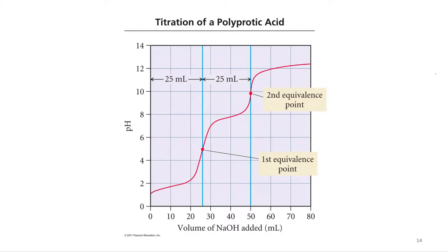What about if you have a polyprotic acid or a diprotic acid? Well, you can do a titration of a polyprotic acid or a diprotic acid in this example, and you can find out the Ka's of each acidic proton.